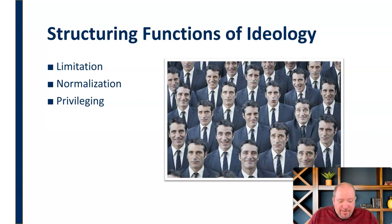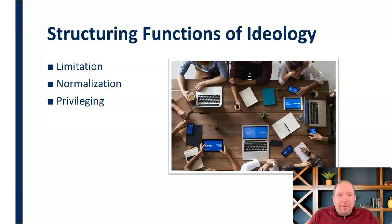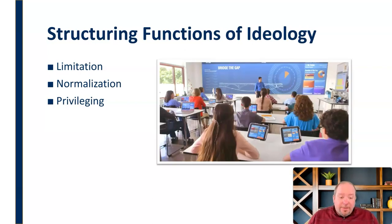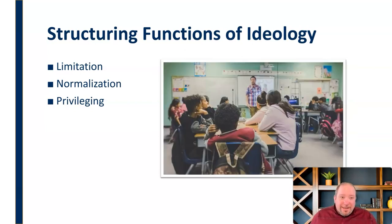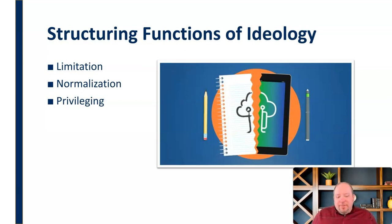Another way we see privileging is in the role of technology in our culture, which is becoming more and more pronounced. Technology is such an important part of our personal and professional lives, and people who can use and understand technology have a significant advantage. If you're in a school that really emphasizes technology and you have that opportunity — which means you're in an area that can afford to make that a priority — then you have a significant advantage over students who don't have access to that technology. This is what we call the digital divide: people who have access to technology and become comfortable with it have an advantage over people who do not. So there's a type of privileging happening there as well.